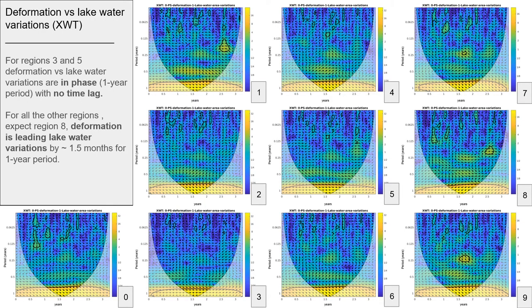We observe that the spatial variations of the lake has an in-phase relationship with ground deformation at a one-year period. For regions 1, 3 and 5, no time lag was observed. For all the other regions, except region 8, we have a time lag of around 1.5 months.